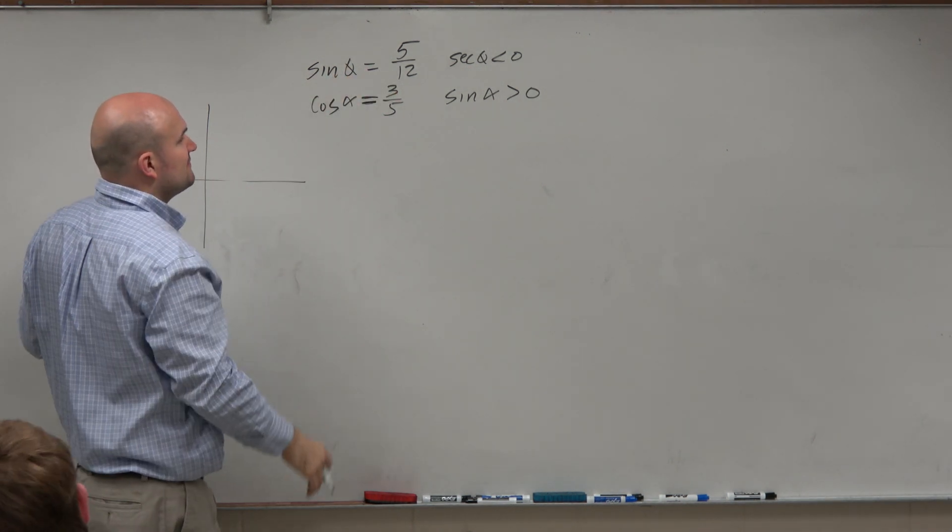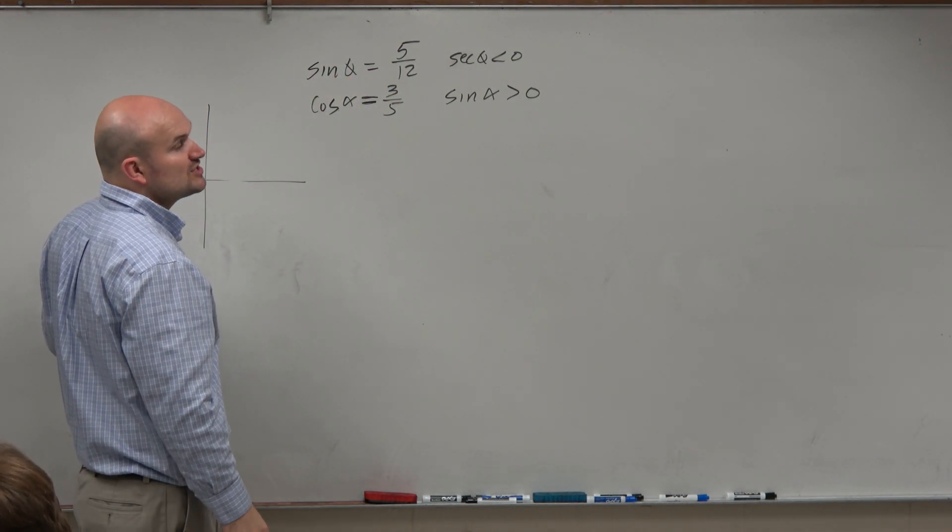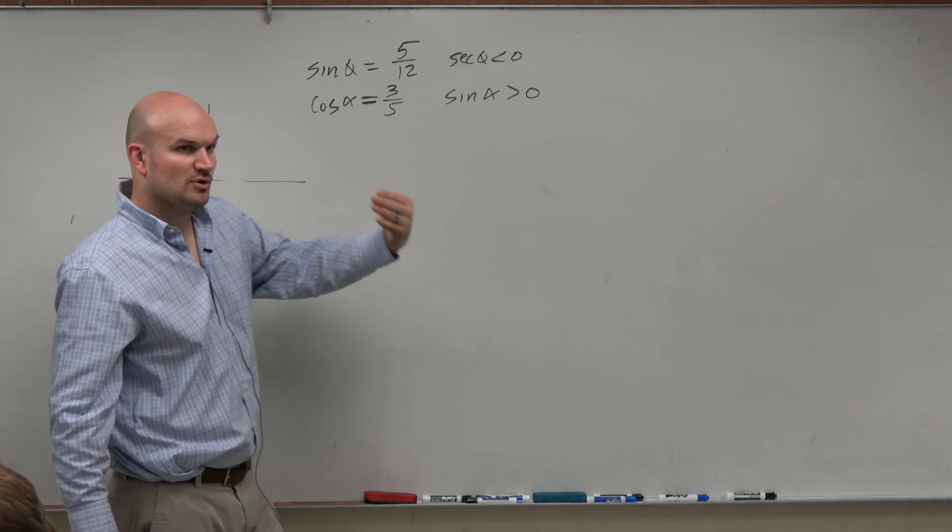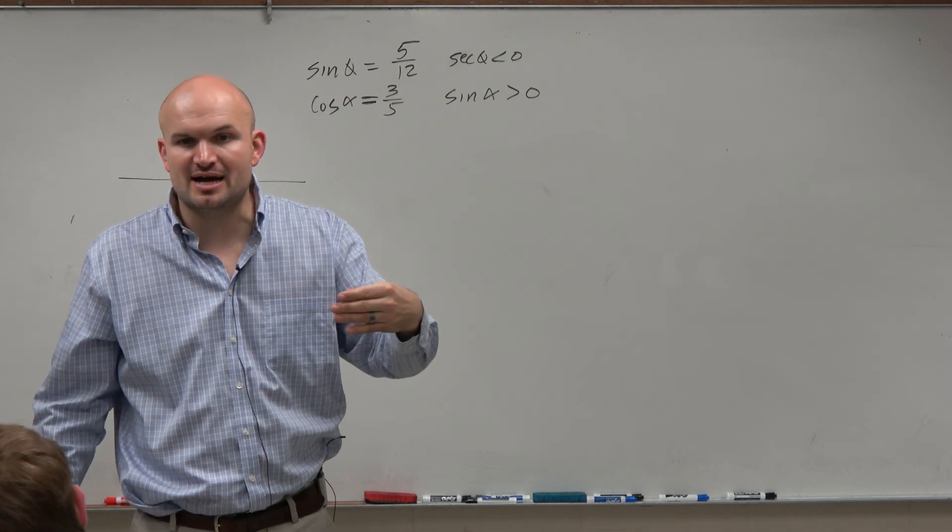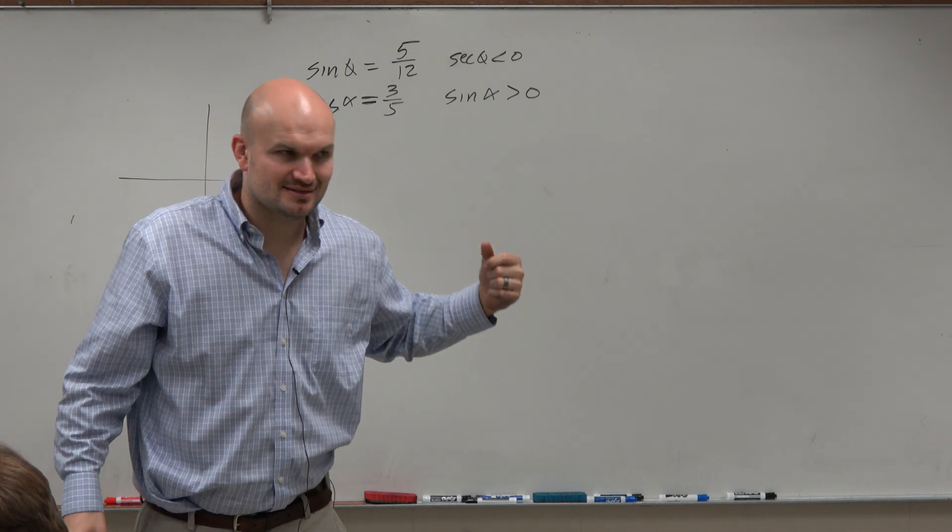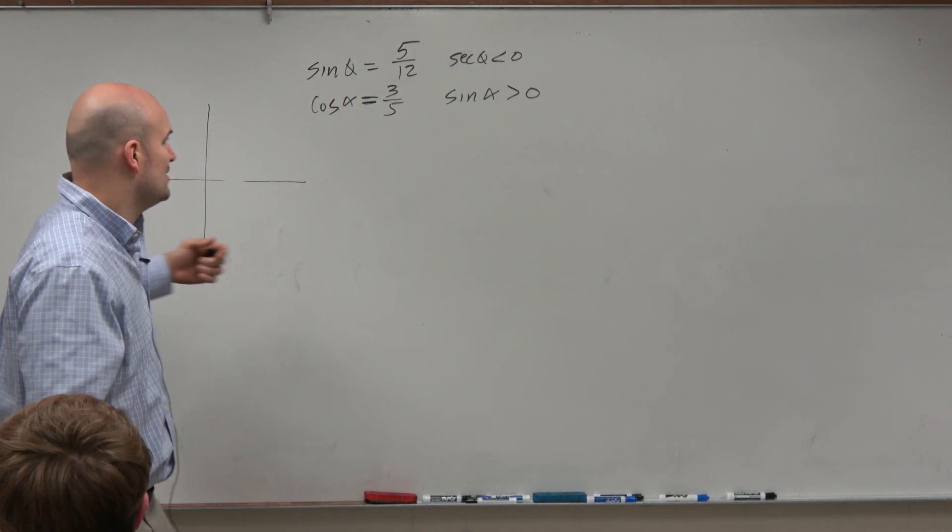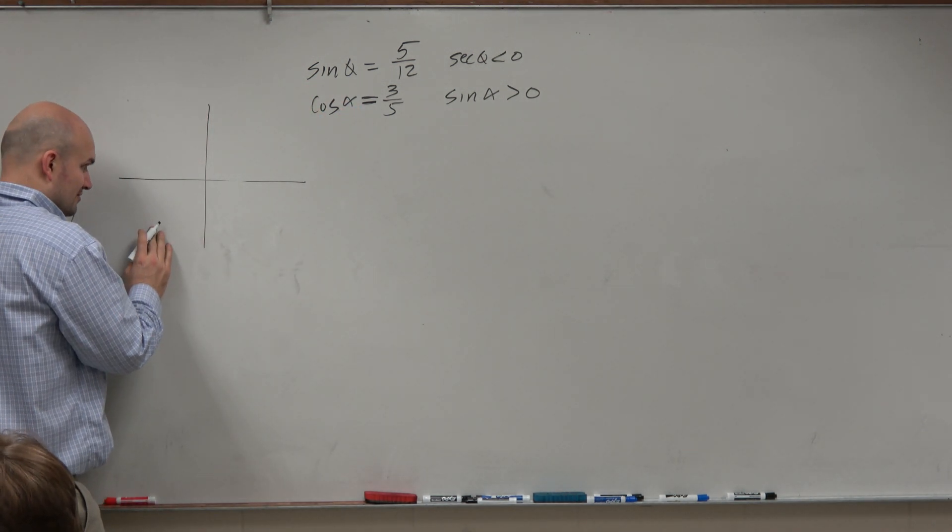So here I have sine of theta is 5 pi over 12, where secant is less than 0. Now hopefully you guys are more familiar for which quadrants when secant is negative, which now is in the second and third.